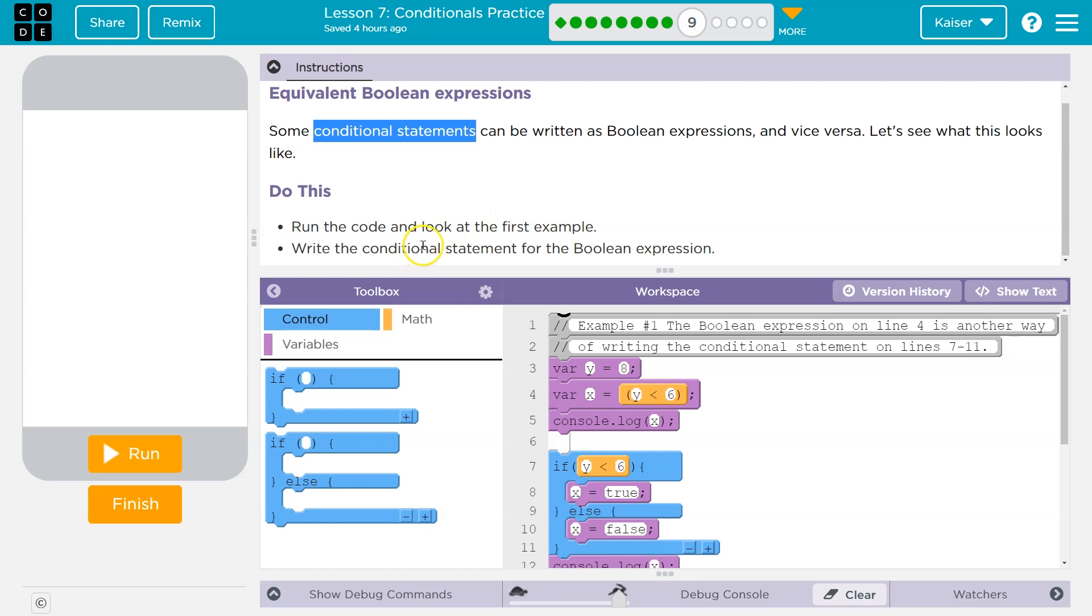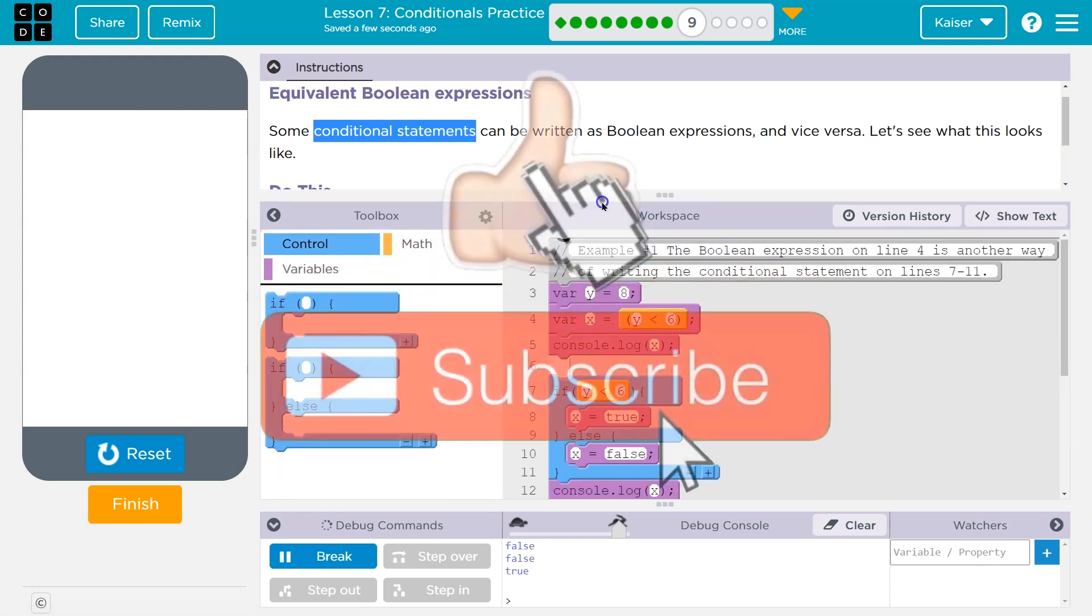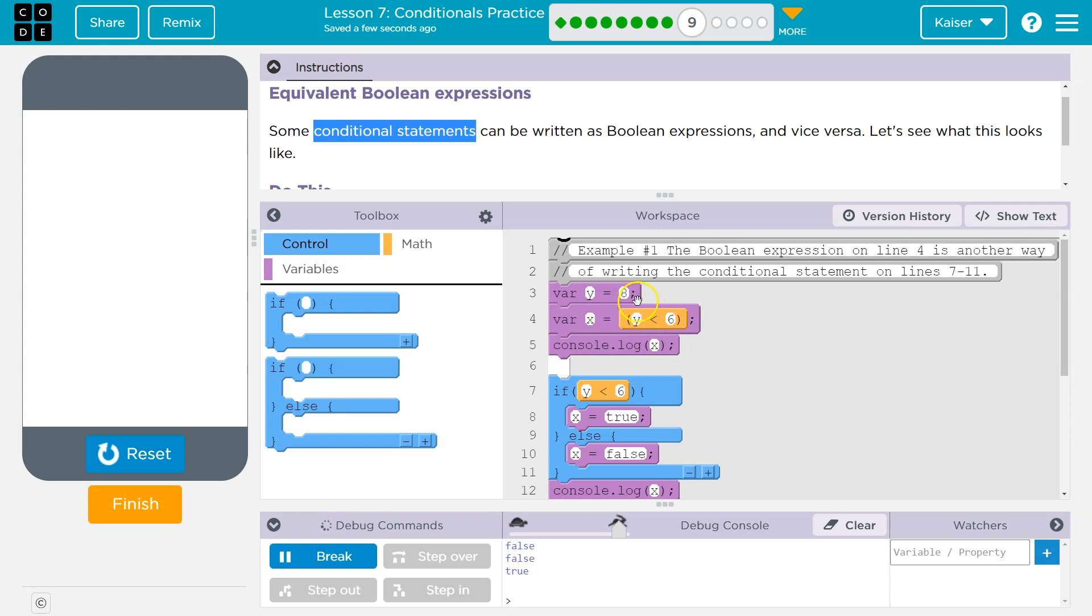Do this. Run the code and look at the first example. I'm hitting run. All right. So our first example says false, false, true. And why does it do that? Let me see. Well, we have a variable y and y is equal to eight. All right.